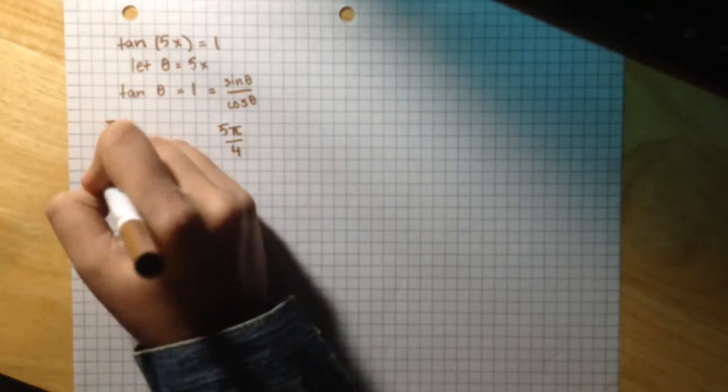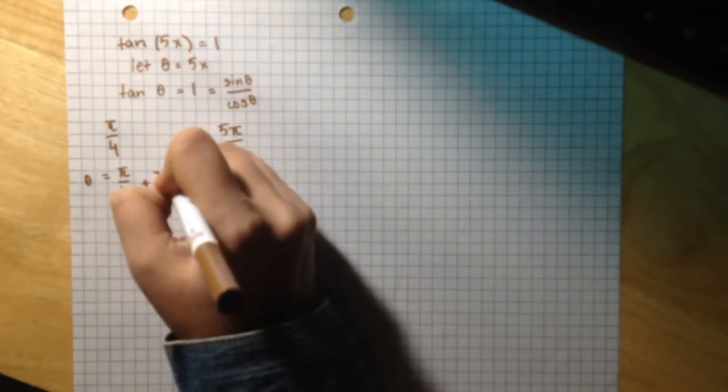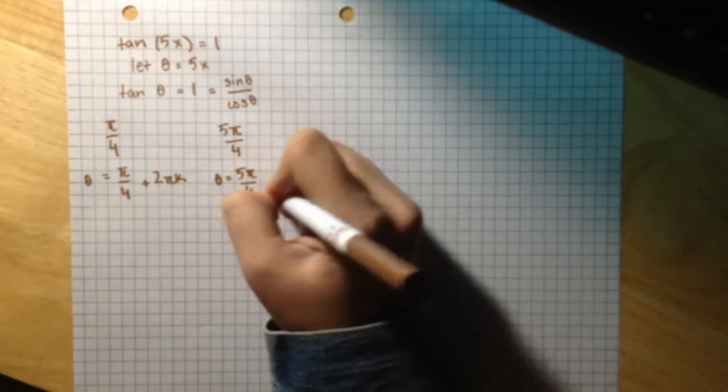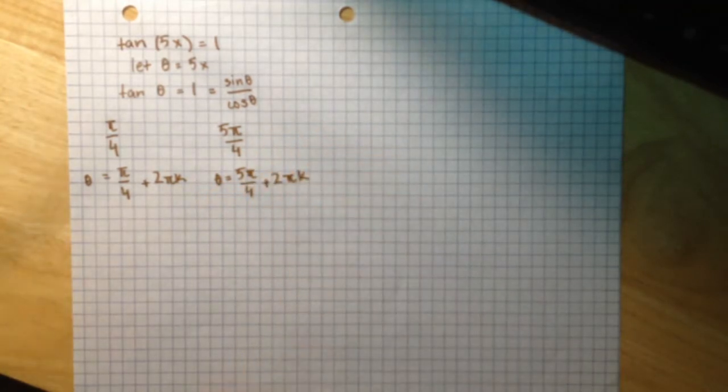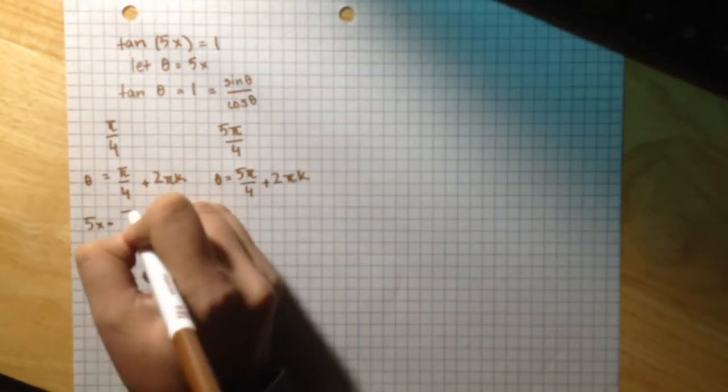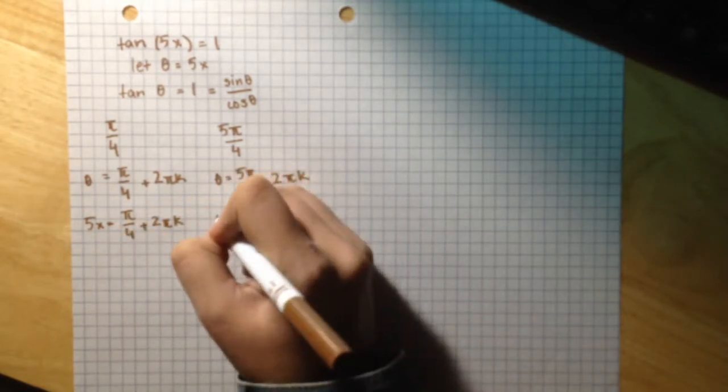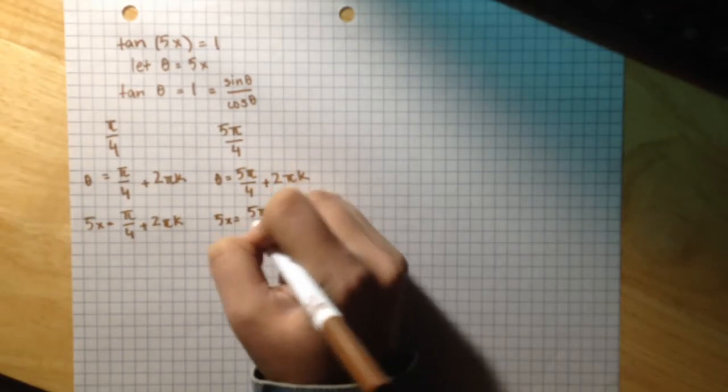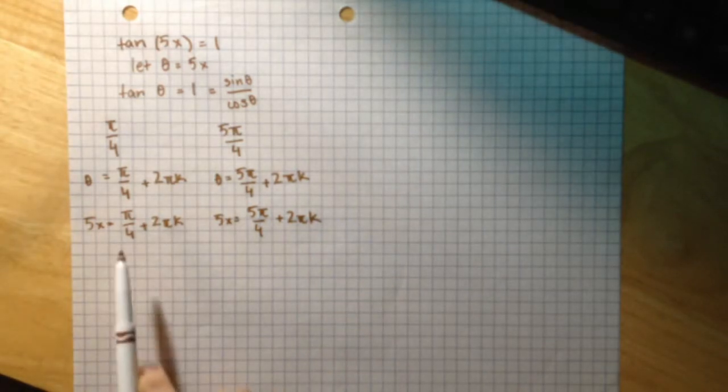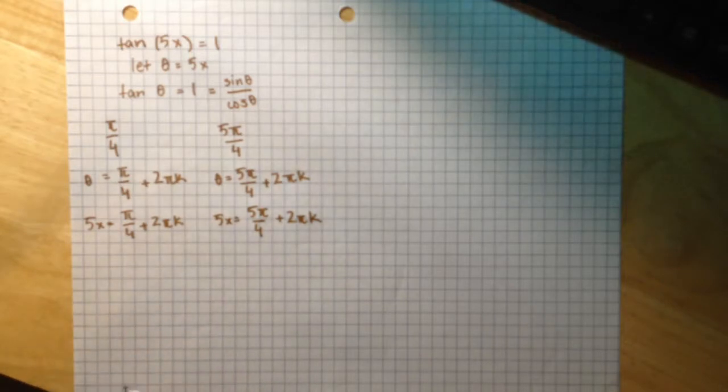So theta equals pi over 4 plus 2pi k, and theta equals 5pi over 4 plus 2pi k. Let's substitute 5x back into this equation. 5x equals pi over 4 plus 2pi k, and 5x equals 5pi over 4 plus 2pi k. Let's isolate x for both of these equations.